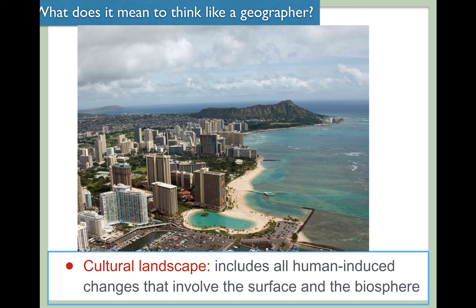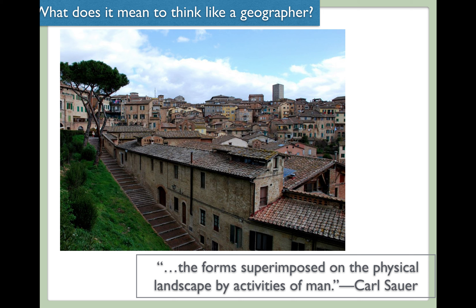The cultural landscape is one of the tools of the geographer to see the ways in which humans have adapted to the environment, and the ways in which the environment has forced adaptations from human beings. As mentioned in the earlier flip videos, it refers to 'the forms superimposed on the physical landscape by the activities of man' — superimposed meaning put on top of. That's the cultural landscape.